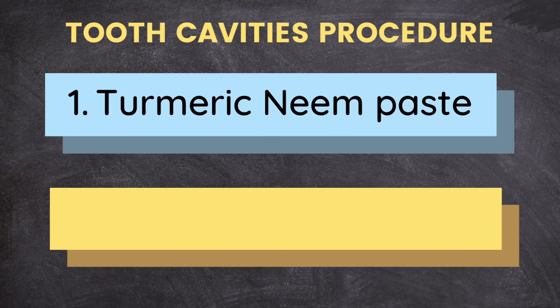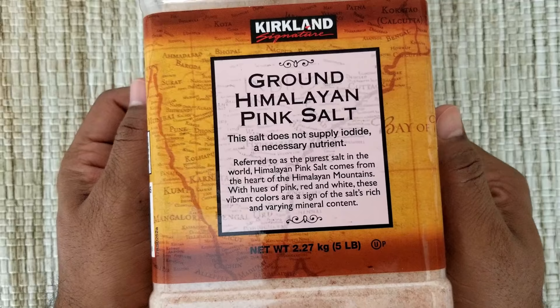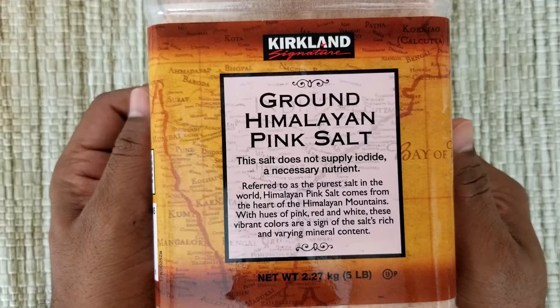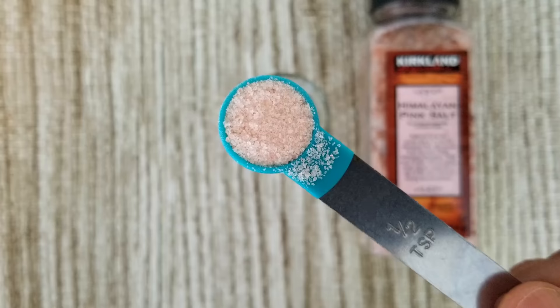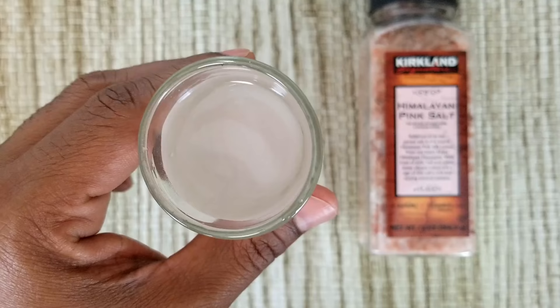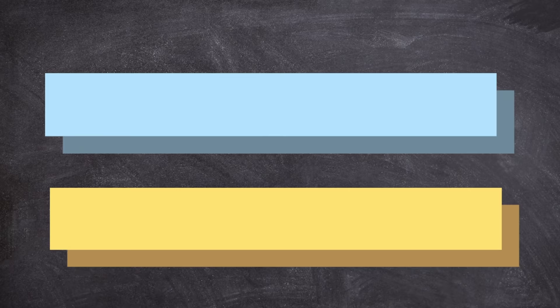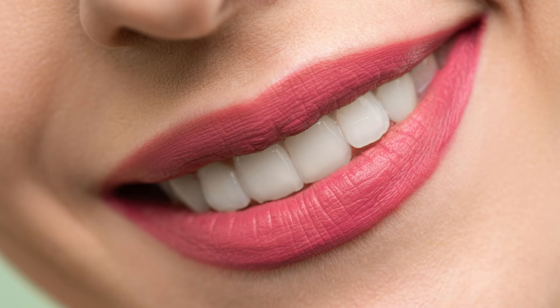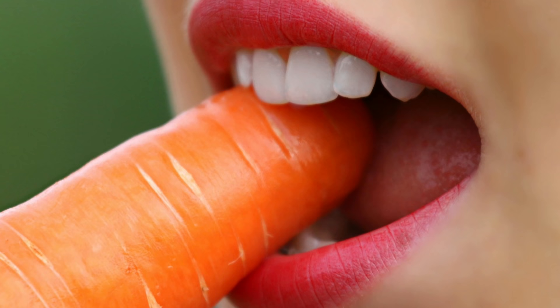Step two is a salt water rinse. Take Himalayan pink salt — you can use sea salt or regular salt as well. In a small glass of water, add half a teaspoon of pink salt and mix it well until the salt dissolves fully. Take this into your mouth, swish for a couple of times, and spit it away. Rinse again with fresh water. When you do these two steps, you can say goodbye to tooth decay and slowly heal cavities and prevent them from growing larger.